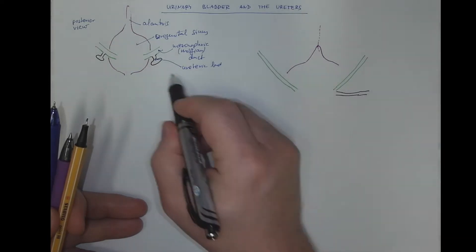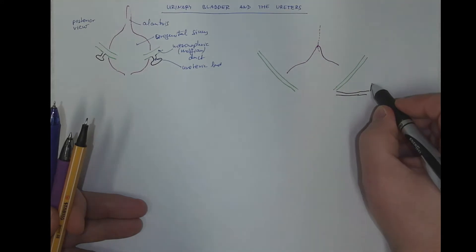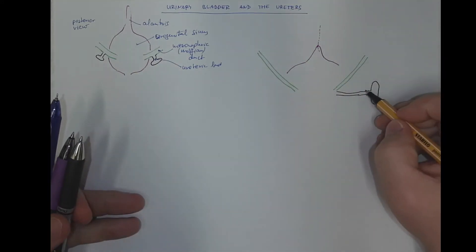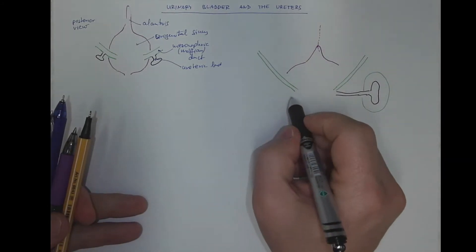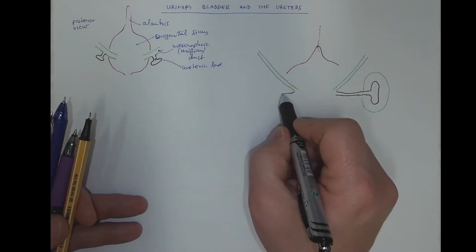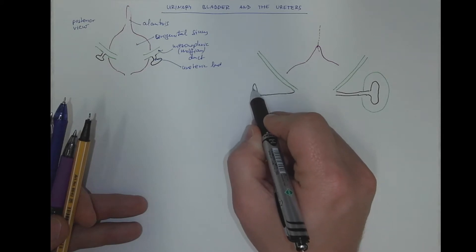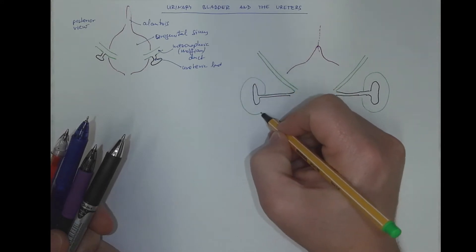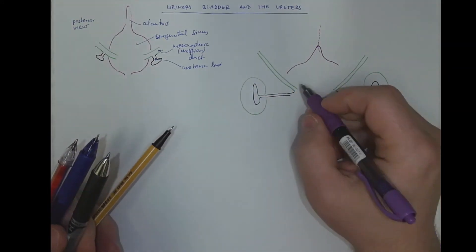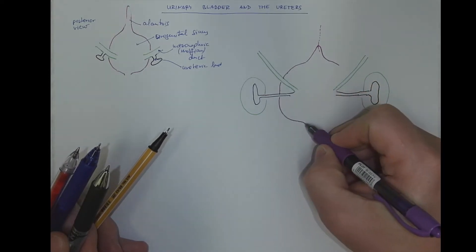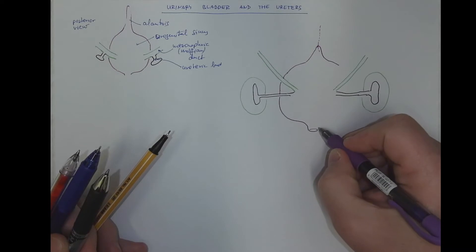Also the ureter will become longer and here the renal pelvis and the metanephrogenic blastema will produce the kidney. Also this will be on the right side, this will be on the left side from the posterior view, a symmetrical situation and here the rest of the urinary bladder with the proximal urethra.